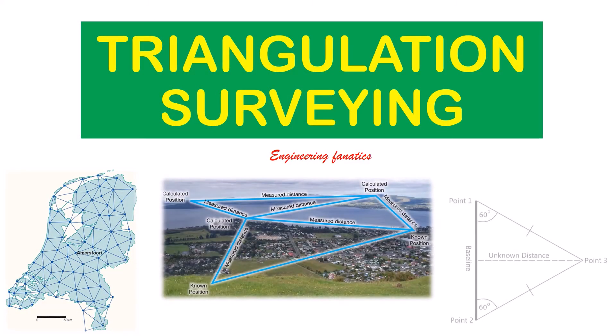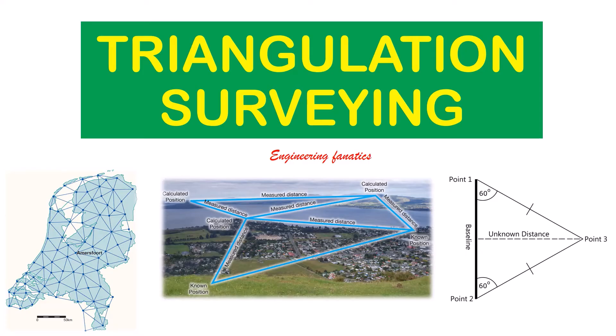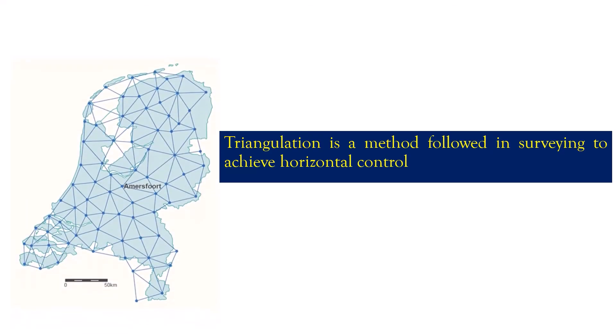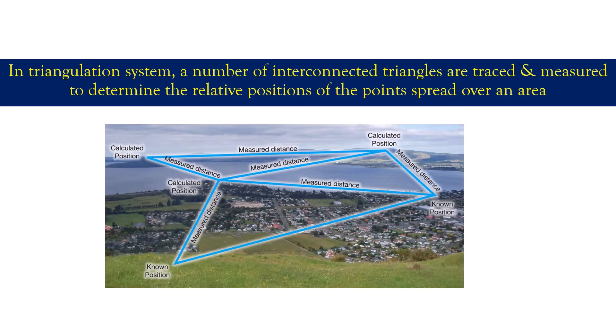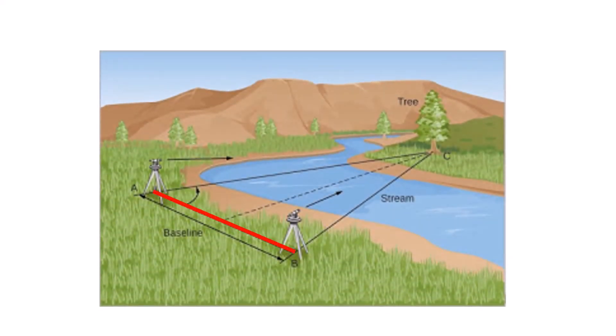What is triangulation in surveying? Triangulation is a method that is followed in surveying to achieve horizontal control. In a triangulation system, a number of interconnected triangles are traced and measured to determine the relative positions of the points spread over an area. In this system, the length of only one line is determined, which is called the baseline, and the other angles and lengths are deduced by observation from this baseline.